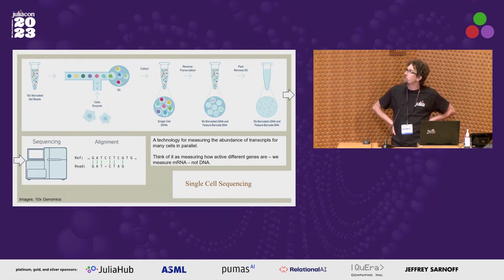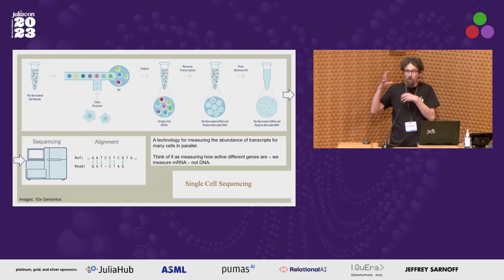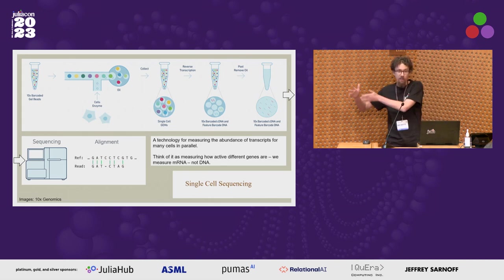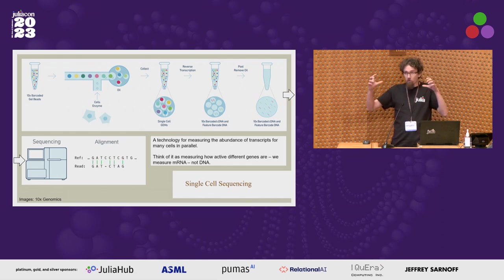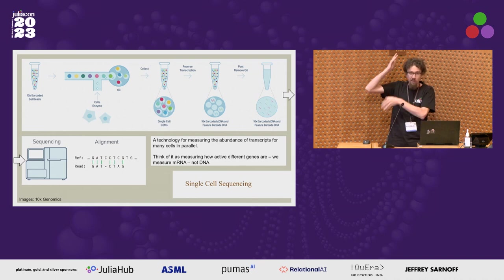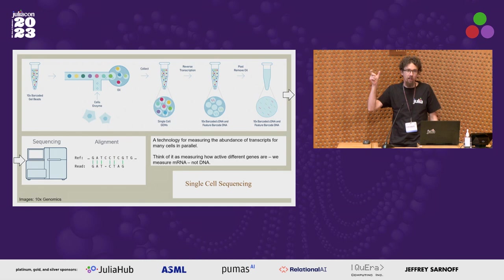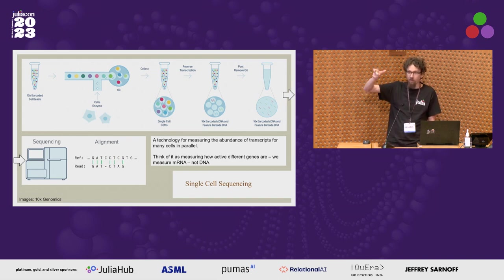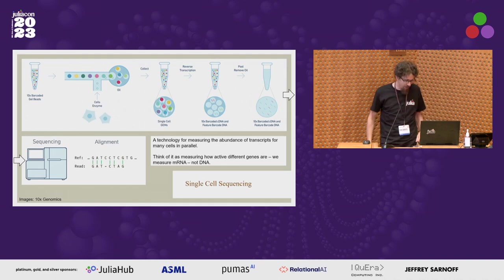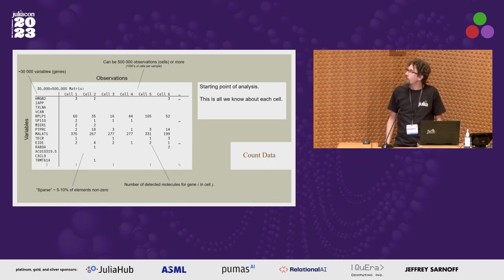A very brief introduction to single cell sequencing from someone doing applied math: we can measure the abundance of transcripts for many cells in parallel, measuring how active different genes are within each cell. You take small droplets, make sure there's one cell in each, destroy the cell, cut up the mRNA molecules, and attach small tags so you know which cell each came from. Then an alignment step maps each read to a gene using the known human genome.